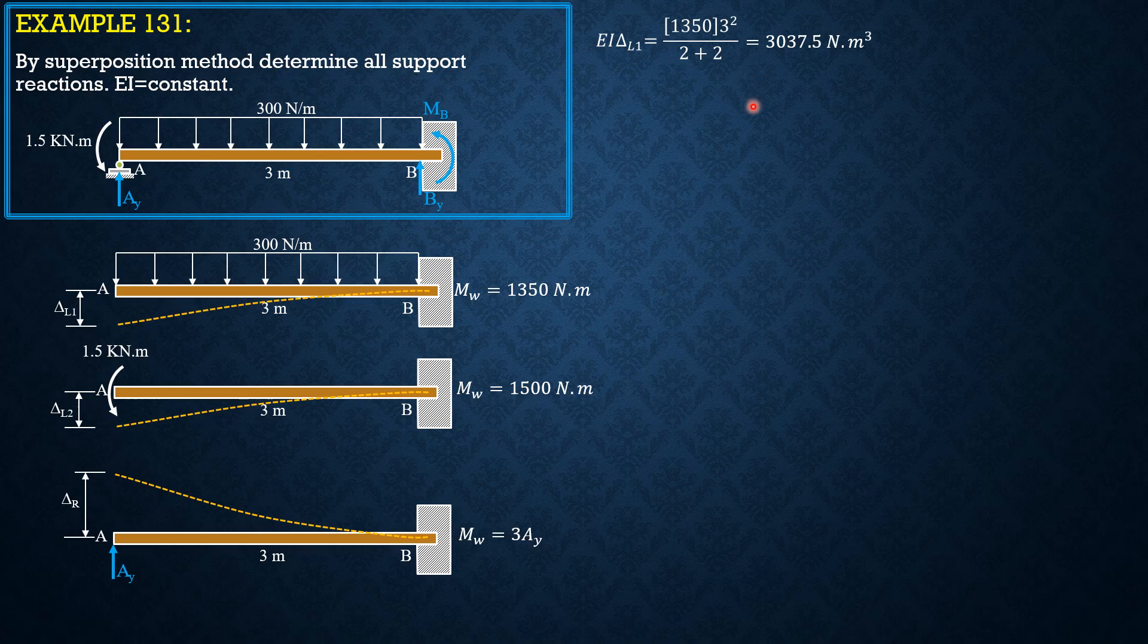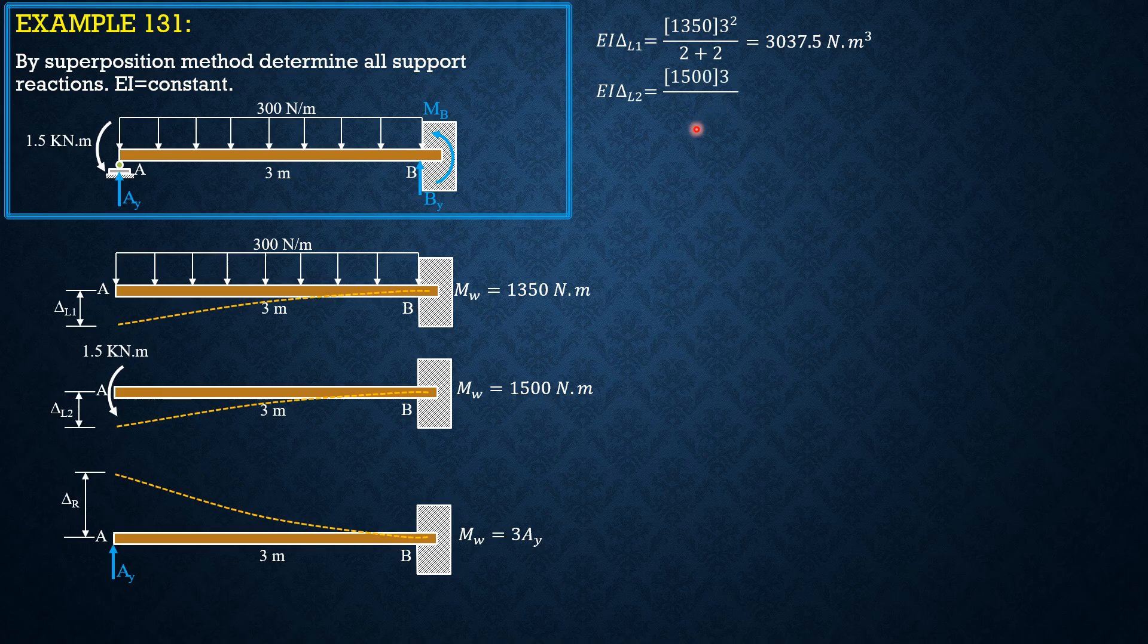Then EI delta L2 is equal to 1,500 times 3 squared over 0 degree plus 2. So it is equal to 6,750 Newton meter cubed.